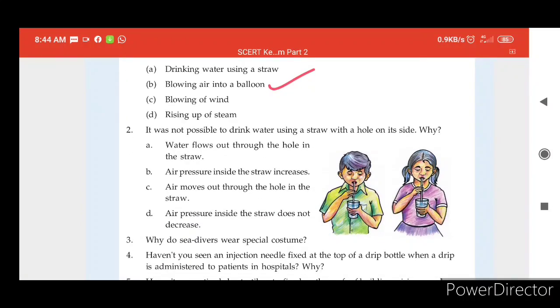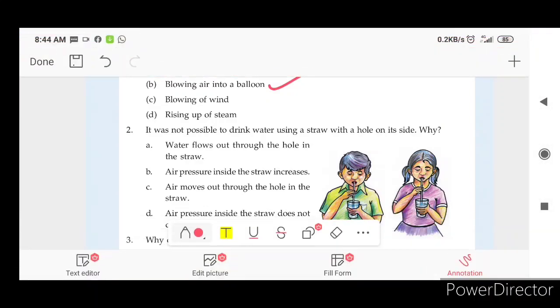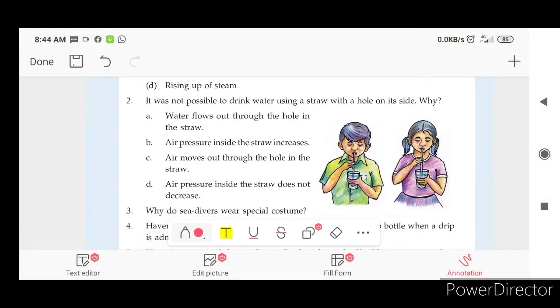Second question. It was not possible to drink water using a straw with a hole on its side. Why? If you have a hole in a straw, we will not be able to create the pressure difference. What is the answer? D is the answer. The air pressure inside the straw does not decrease.